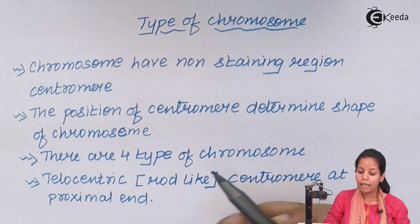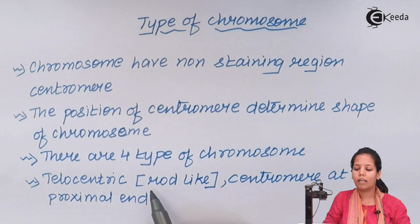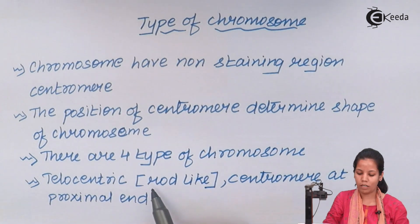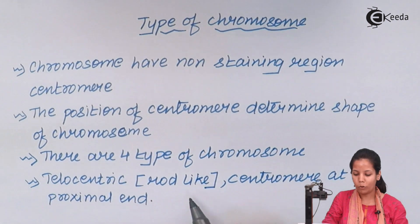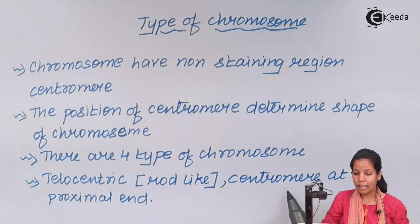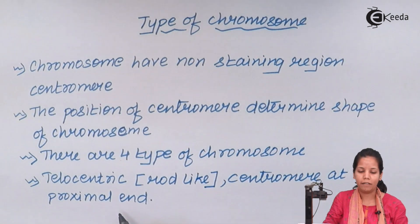The four types are acrocentric, telocentric, metacentric, and submetacentric. Telocentric chromosomes are basically rod-like and have the centromere at the proximal end.